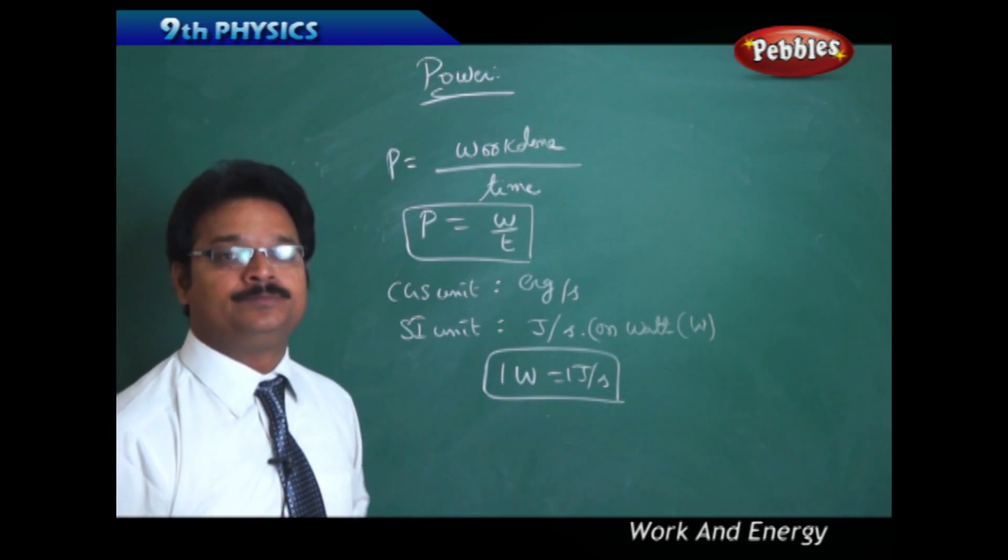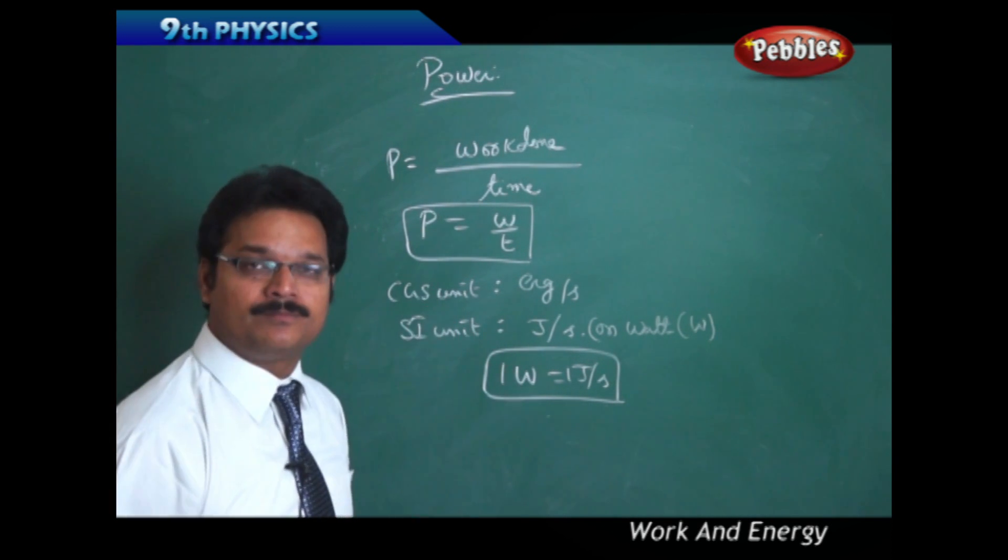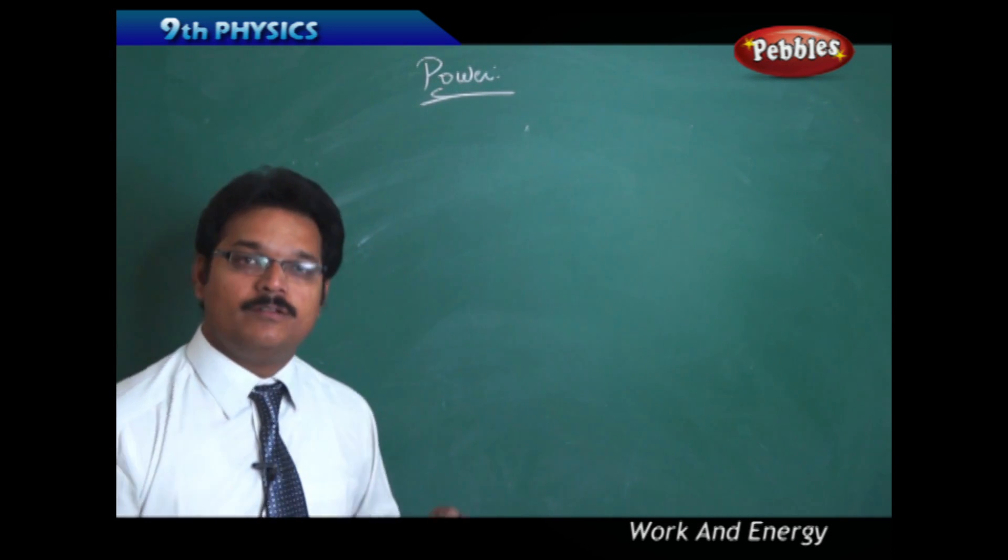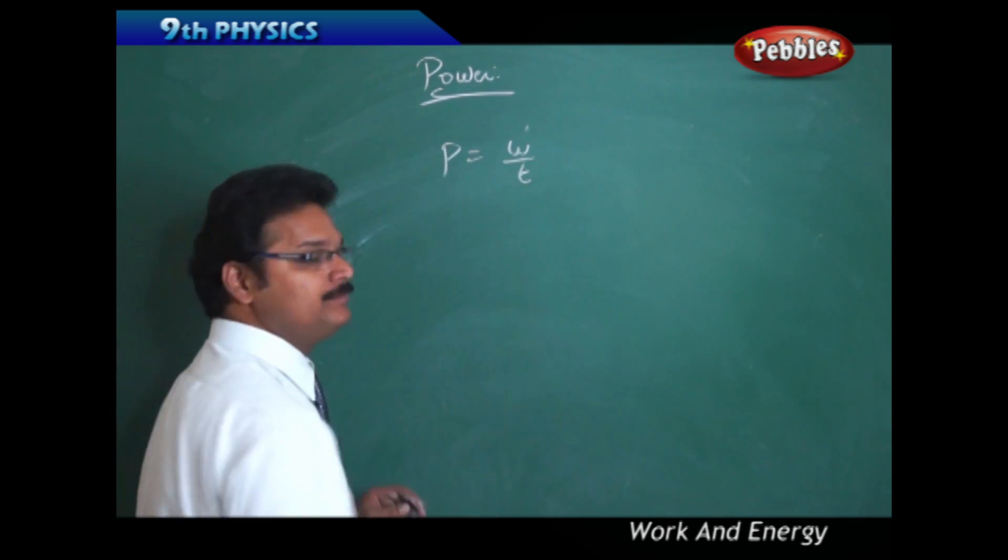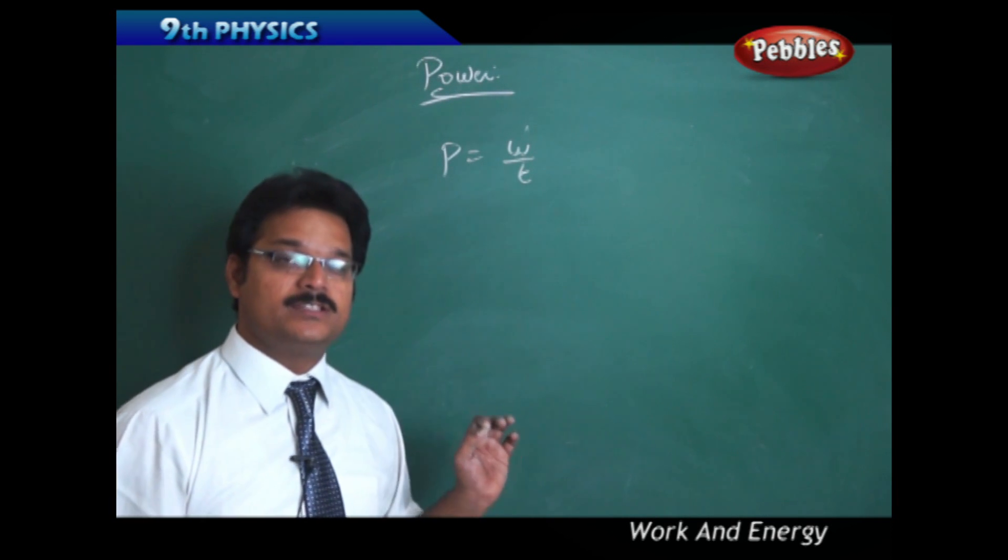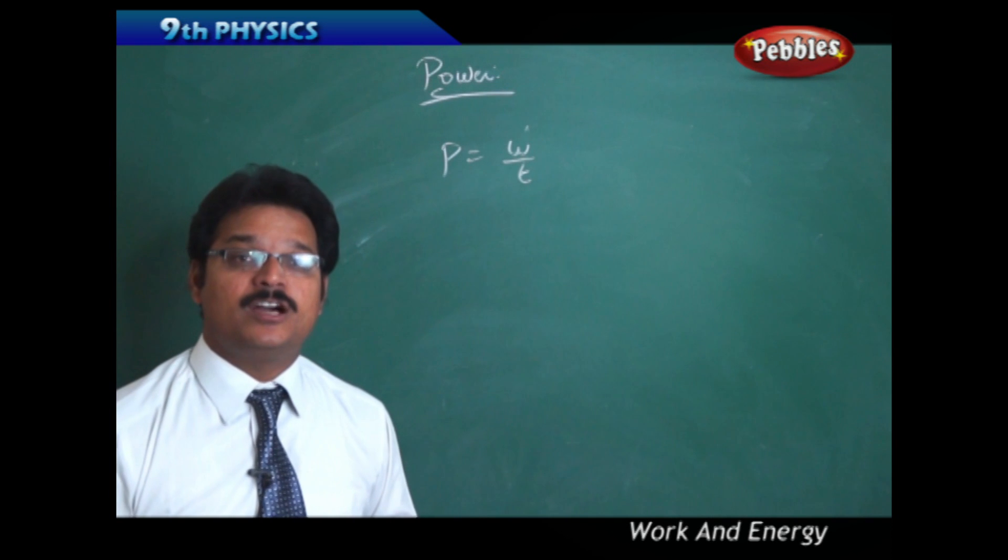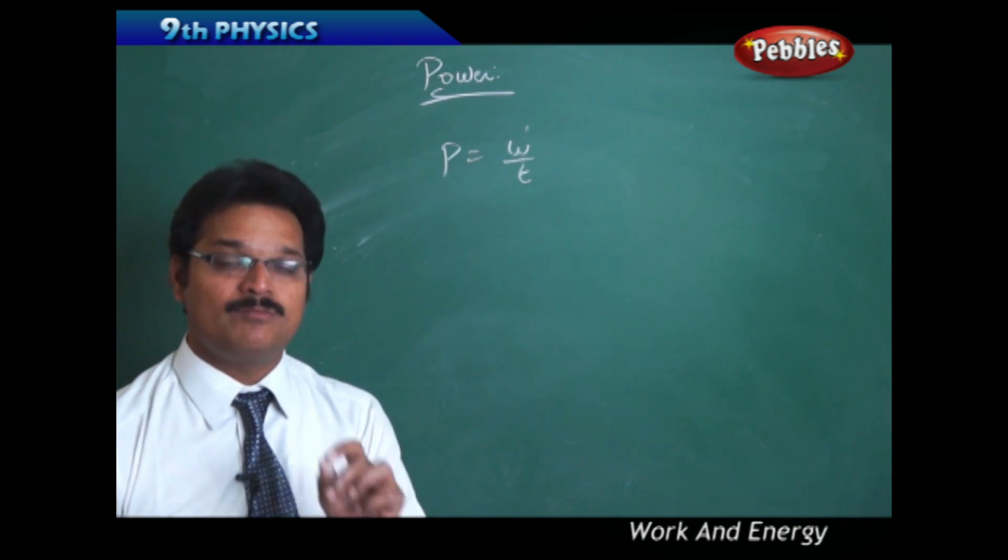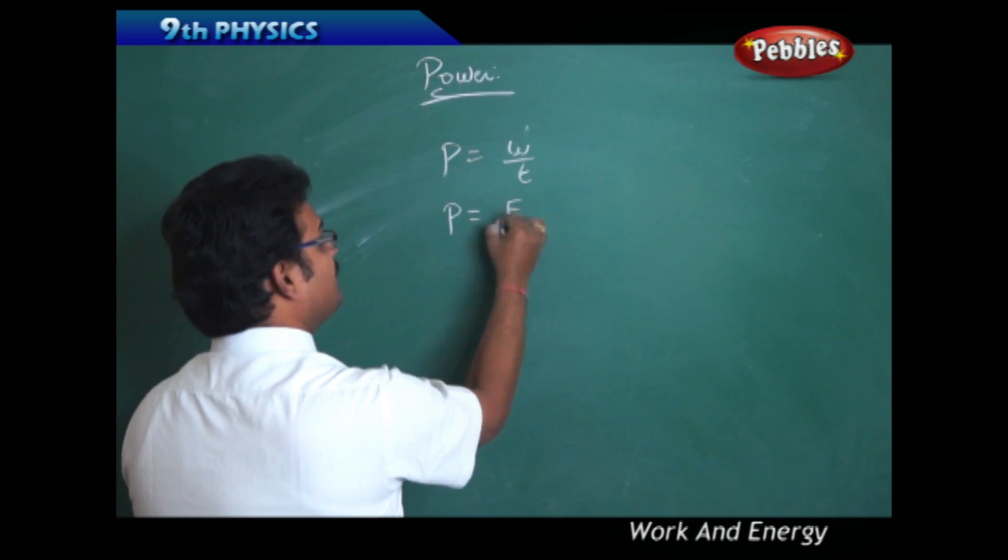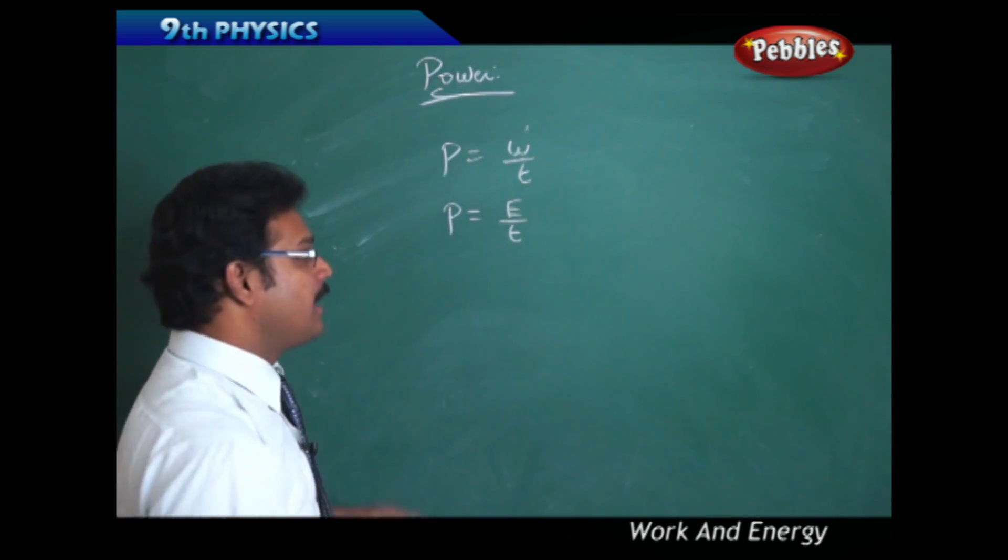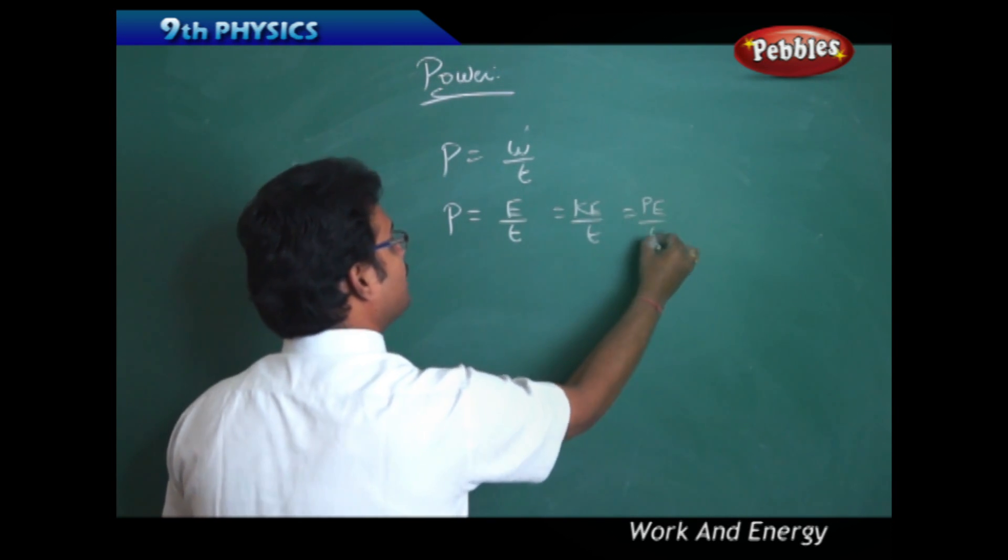Power P equals work by time. Remember, power is not only the amount of work done per unit time, but also the amount of energy consumed per unit time. So power can be written as energy by time - it may be kinetic energy by time or potential energy by time.